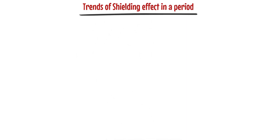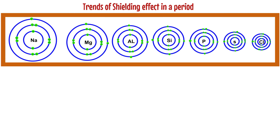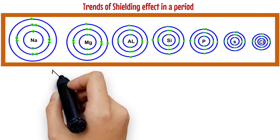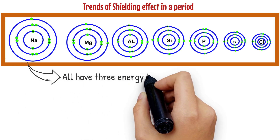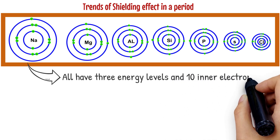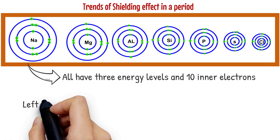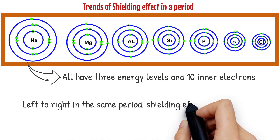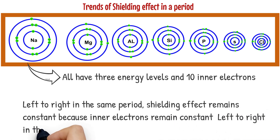Trends of shielding effect in a period. Consider these elements from period 3, from sodium to chlorine. Left to right in the same period, the number of energy levels remains constant and the number of inner electrons also remains constant. As the number of inner electrons remains constant, the strength of shielding effect also remains constant.